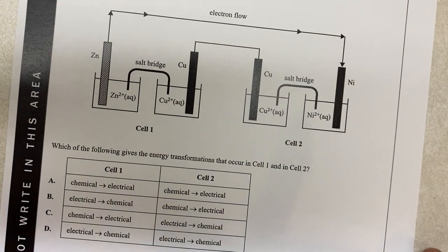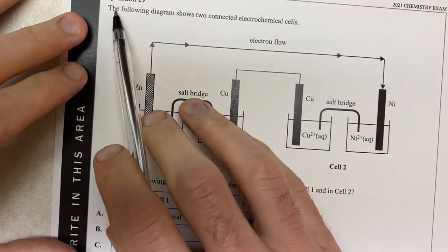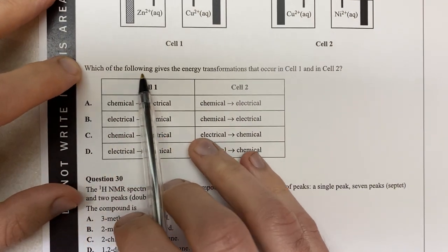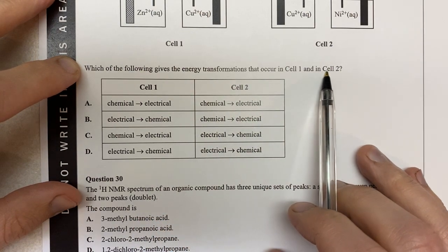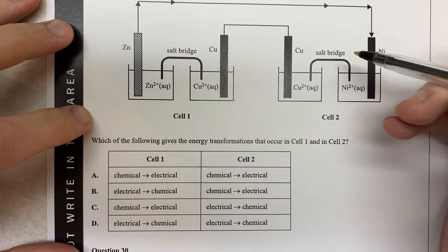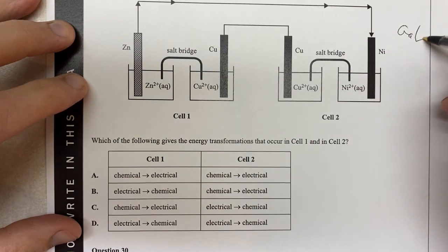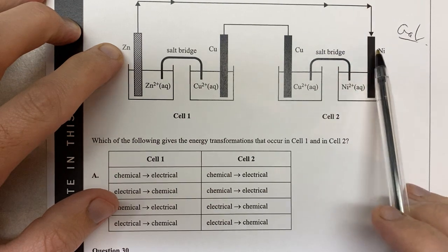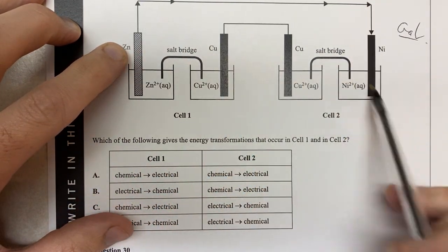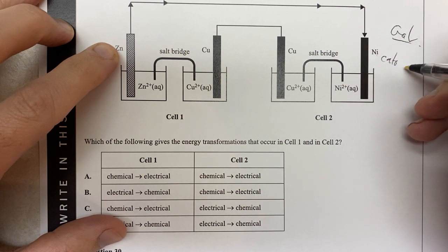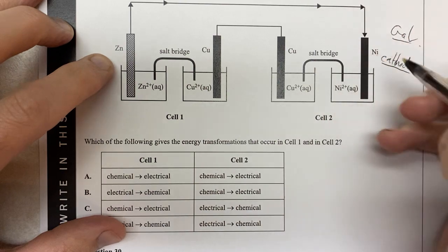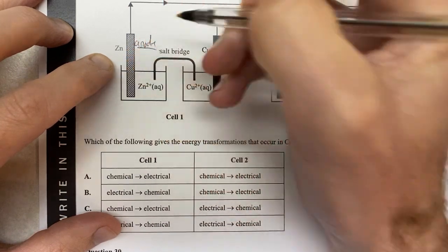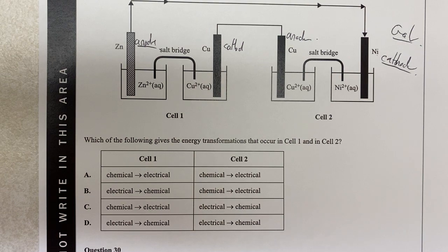Moving on to question 29, almost done our multiple choice for today. The following diagram shows two connected electrochemical cells. Which of the following gives the energy transformations that occur in cell one and cell two? So what's happening here — these are galvanic cells. We have electron flow from our zinc over here to our nickel. So therefore the nickel is gaining electrons — this is the cathode. This is the anode here, this is the cathode, and this is the anode.